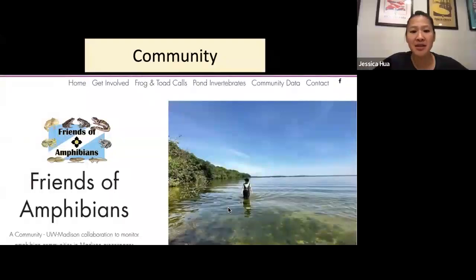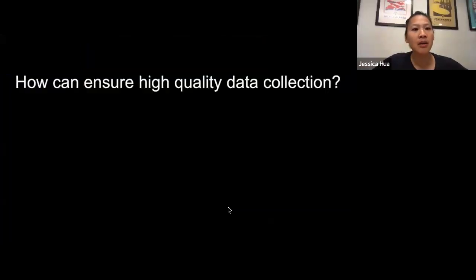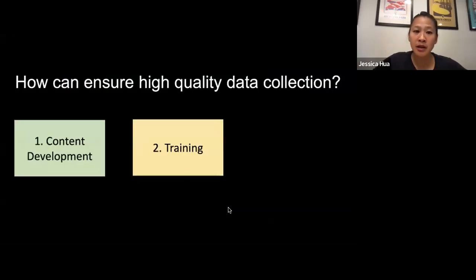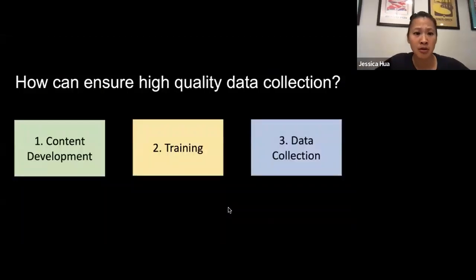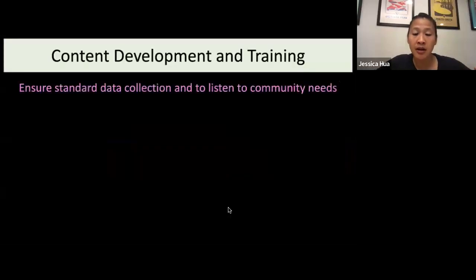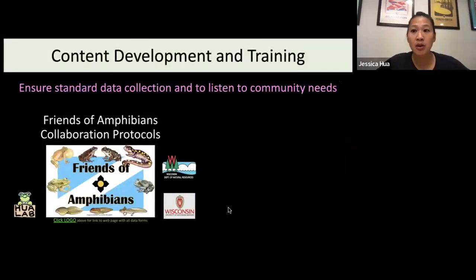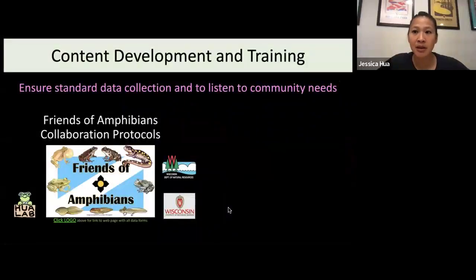We're in the second year of this initiative now. We've talked with these different community members and come to a shared collective research question: why are amphibians found in some places but not others, and how does it change across time? My lab's role is to develop protocols to standardize measurements across these different green spaces, and then the community members collect the data. The initiative is called Friends of Amphibians. We take a three-tiered approach: content development, training community members, and then sending community members to collect data. All our protocols are online, meant to be accessible to anybody who wants to do the work, whether in collaboration with friends groups or as individuals.